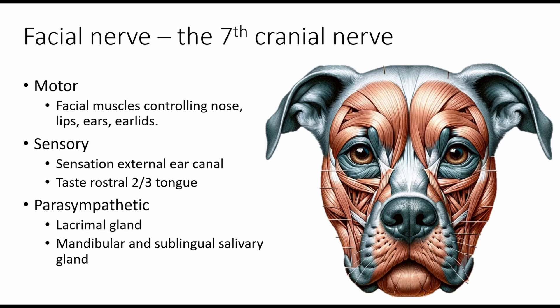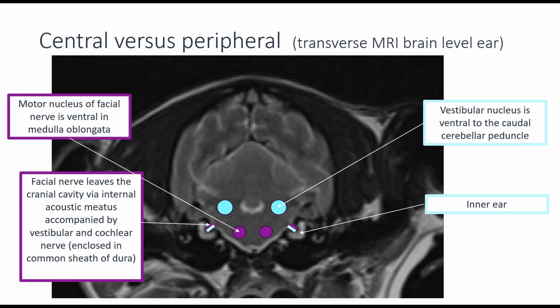It's very important to distinguish this from a trigeminal lesion. In this dog, we've identified a vestibular problem and on the same side a facial nerve problem. The most important next step is to determine whether this is a central problem in the brain, versus a peripheral problem — the vestibular nerve or facial nerve, which run together enclosed in a common dural sheath when leaving the skull — or an inner ear or middle ear problem, since the facial nerve also travels through the facial canal in that region.